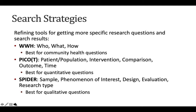I want to introduce you to three different search strategies. The first one we'll use today is Who, What, How. These search strategies are refining tools that help you get more specific for your research question, as well as build a complex search that gets more targeted results. I tend to suggest the Who, What, How strategy for folks who have community health questions, because we're hitting those three important categories that help us find resources to answer our questions.